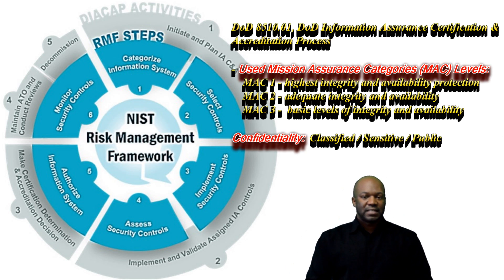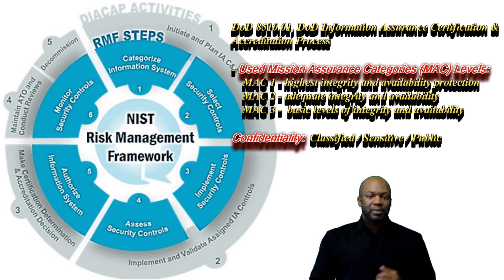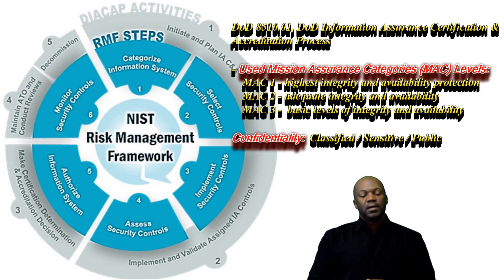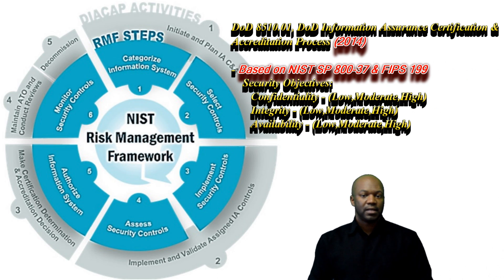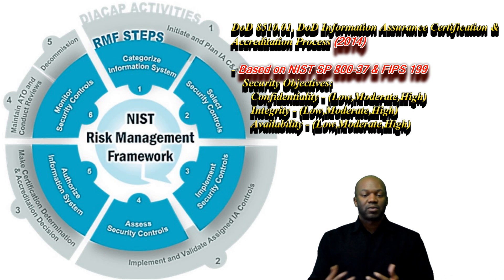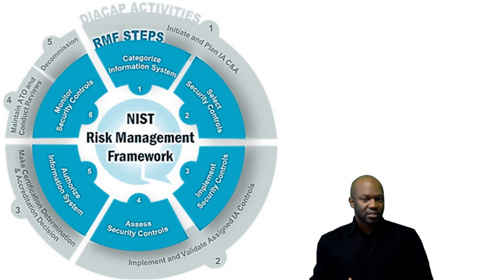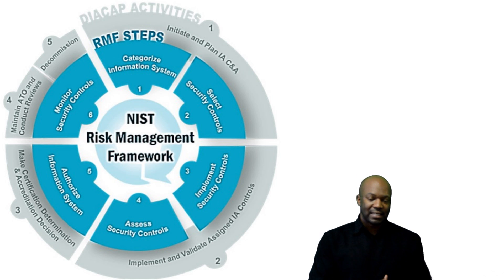The only difference is that initiate and plan CNA was pulling from the old 8510 document, and now the steps are coming from NIST SP-837, which is a six-step process, and categorization is coming from FIPS 199. You're still categorizing the security level of the system, just like in DICAP.